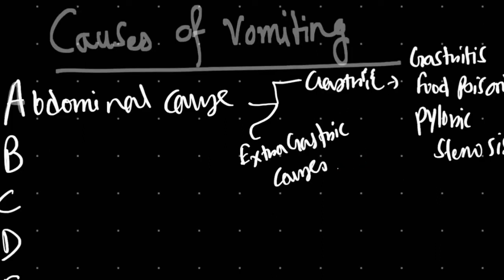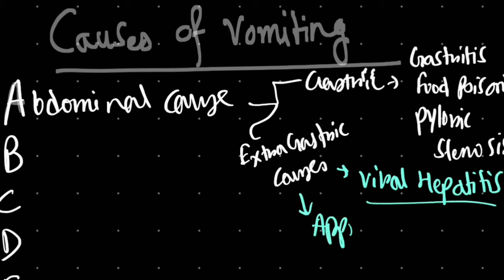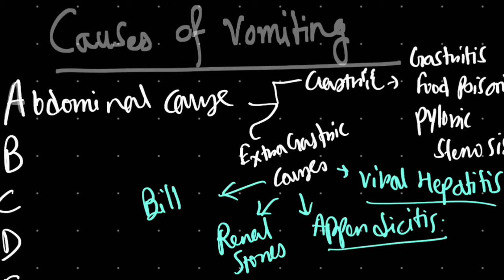Extra-gastric causes include liver involvement in viral hepatitis, which can cause severe nausea and vomiting. Appendicitis can cause pain-induced vomiting. Other organs like the kidney can have renal stones, the gallbladder can have biliary colic, and intestinal causes like intestinal obstruction. These are the abdominal causes of vomiting.